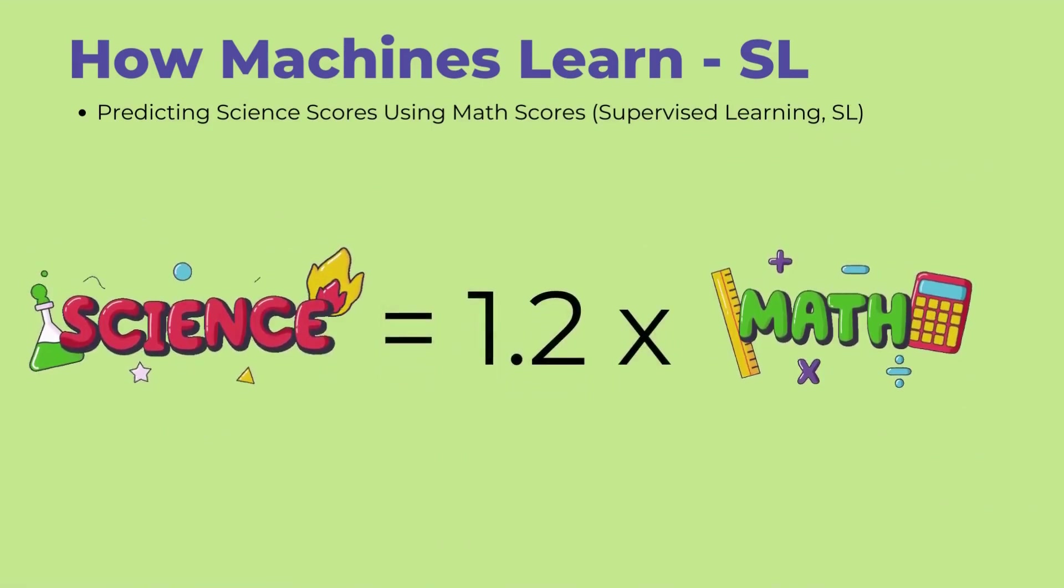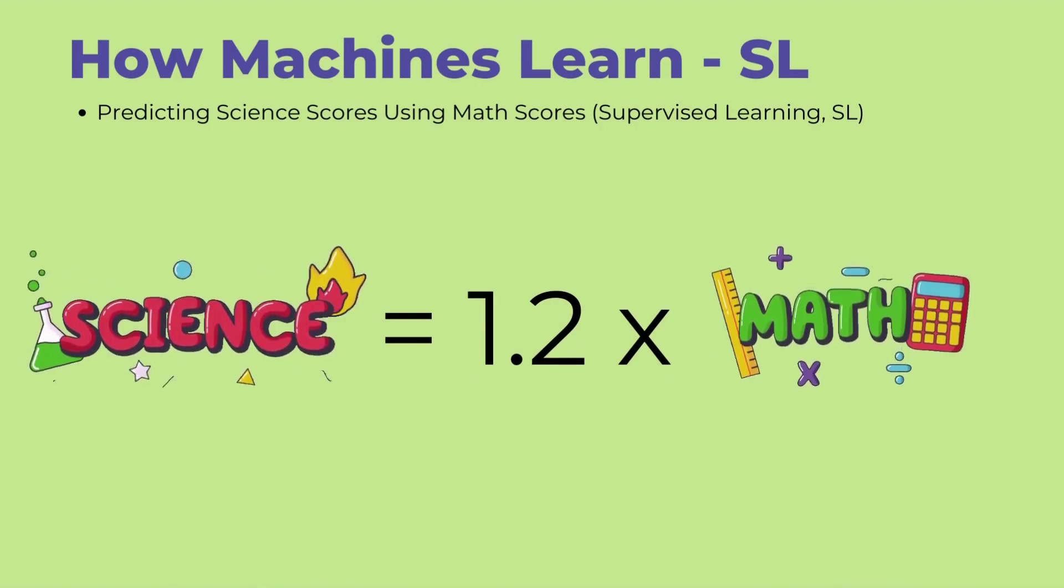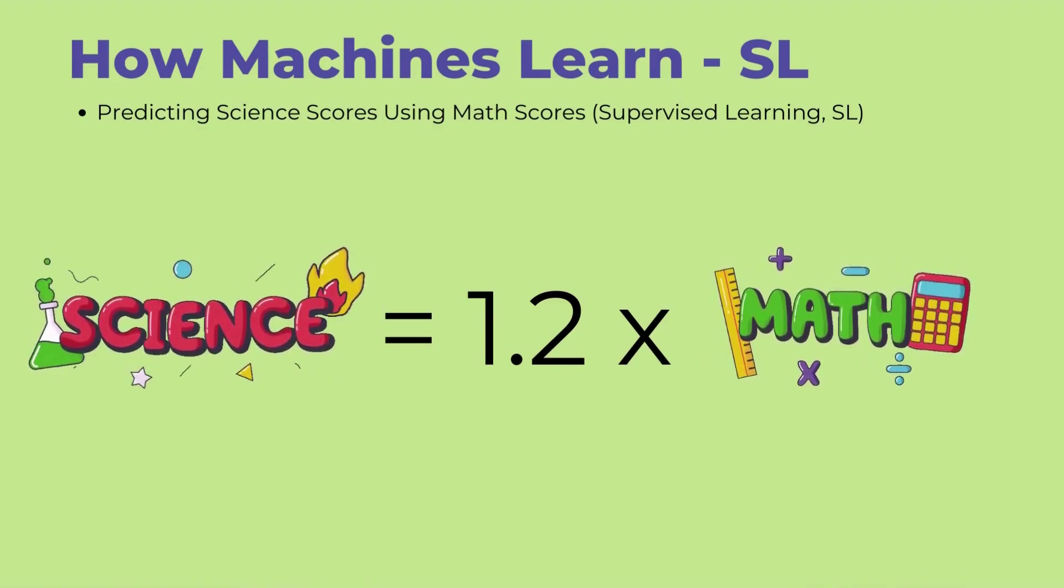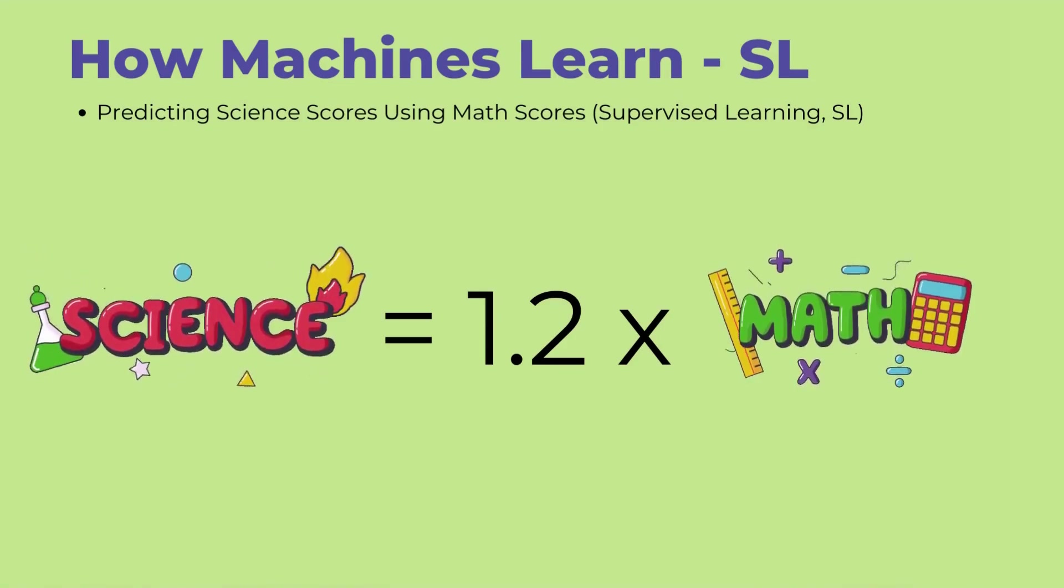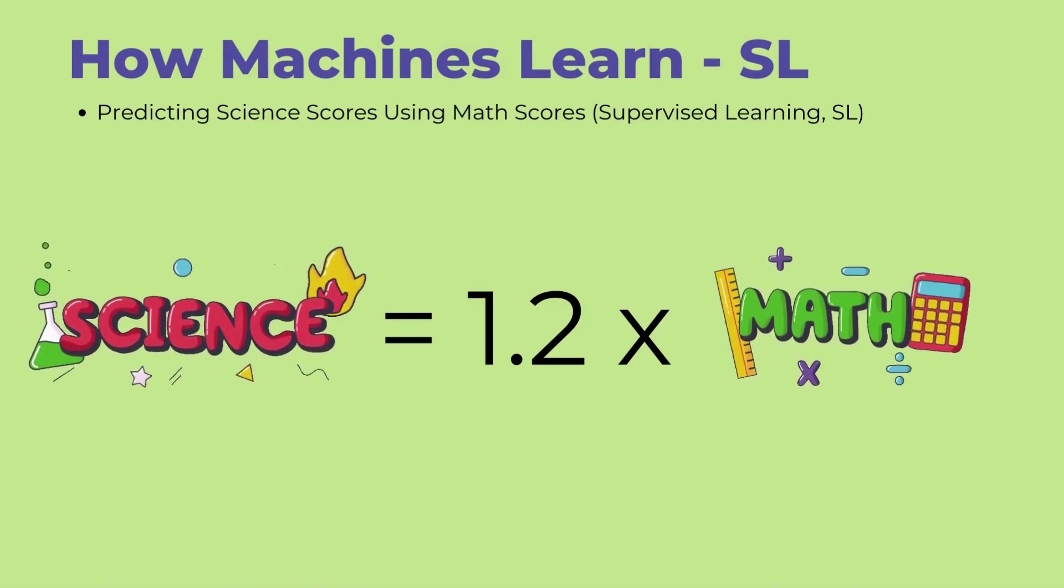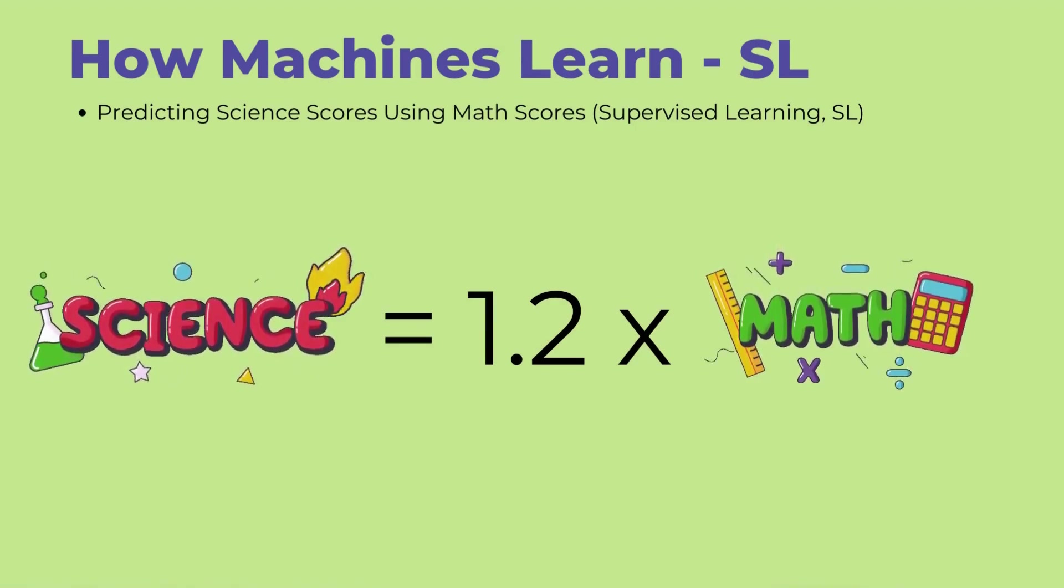We initially set the model equation as Y equals WX, and through training, the value of W converged to 1.2. Thus, the final equation of the trained model is Y equals 1.2X. By inputting the math score X into this model equation, we multiply it by 1.2 to predict the science score. We have now learned how artificial intelligence learns and predicts.